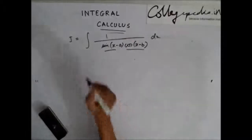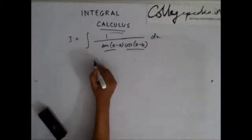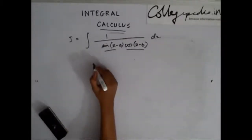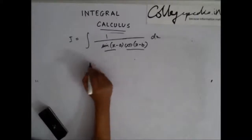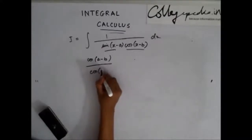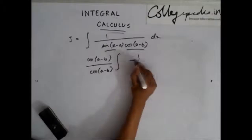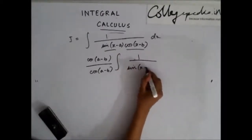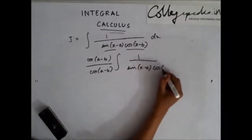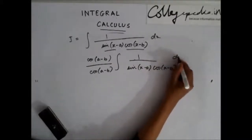So as a first step, let me multiply both numerator and denominator by cos of a minus b. Here I have integration of sin of x minus a cos of x minus b dx.